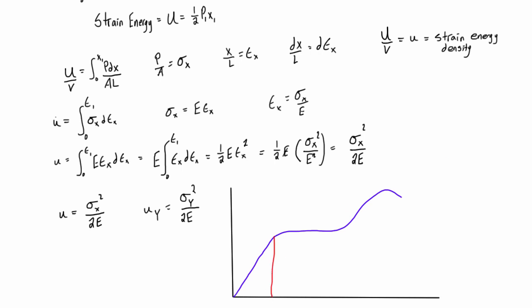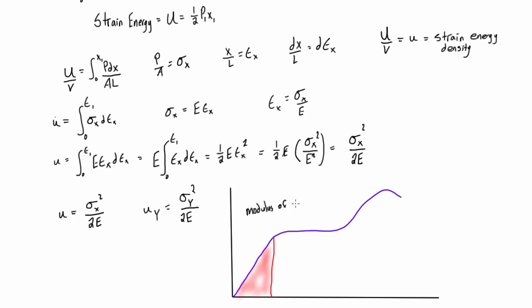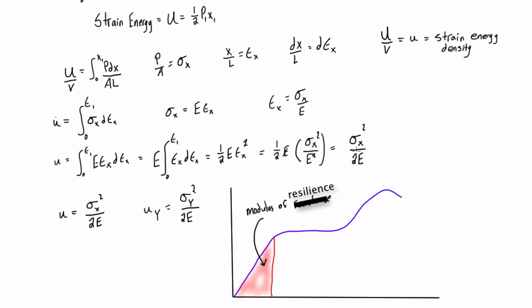But if we basically plot this area in here, or calculate the area in this section, we've gone all the way up to the yield point. This is basically what we call the modulus of resistance.